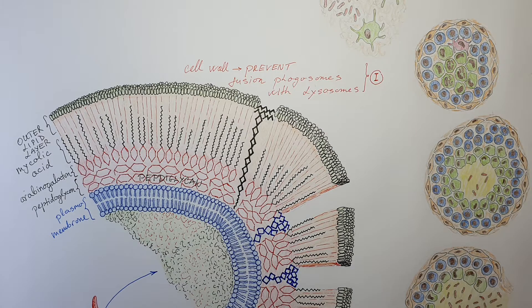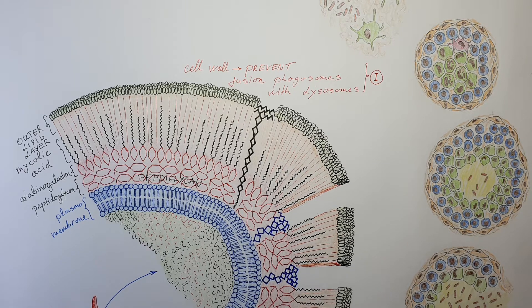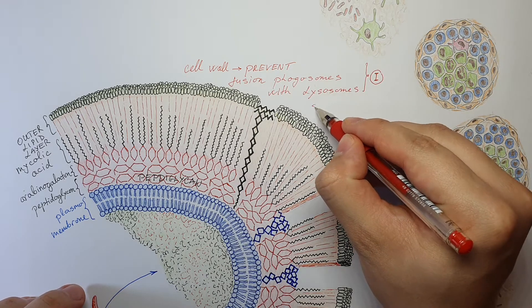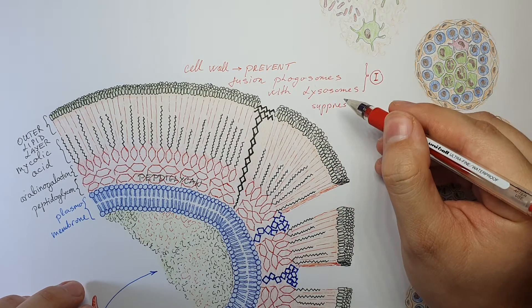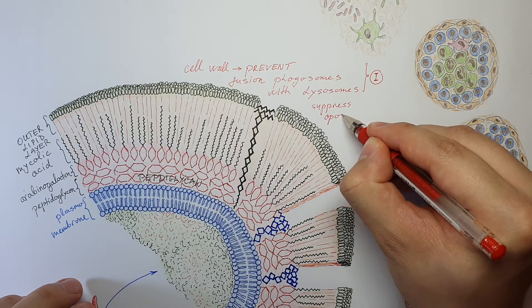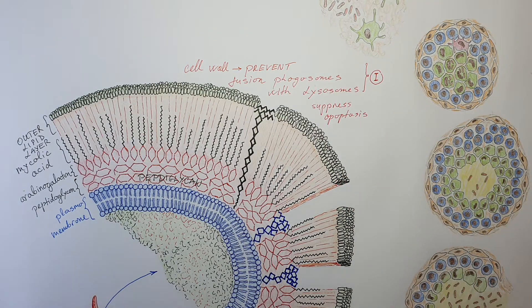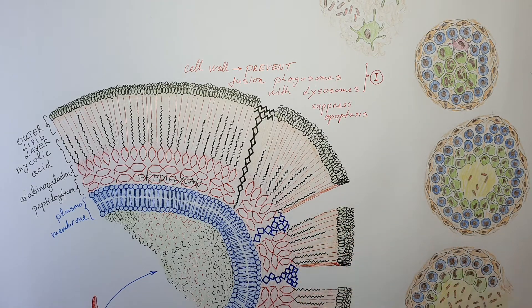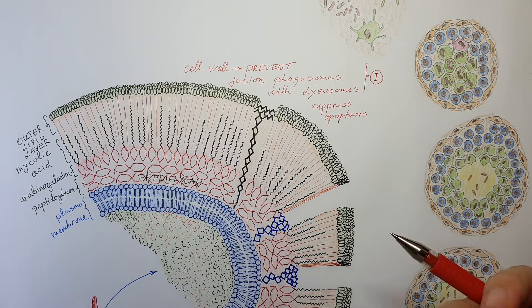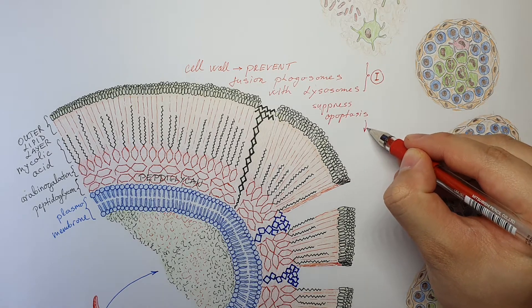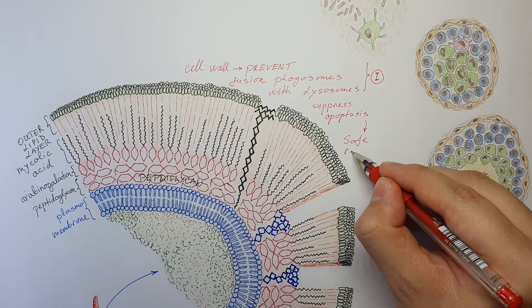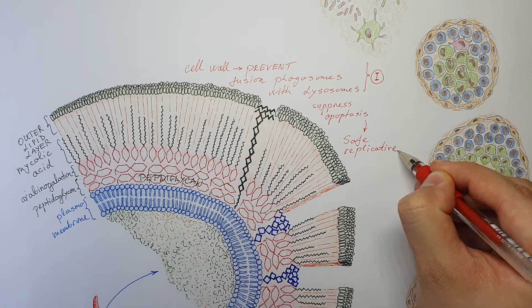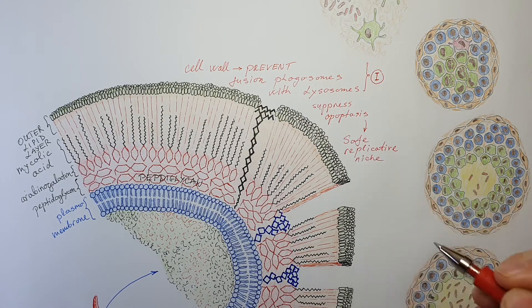But of course, tuberculosis has also other possibilities to replicate in our cells as an intracellular pathogen. It can, for example, suppress apoptosis. So if it suppresses apoptosis, infected alveolar macrophages will not die. And they will basically just be a protective shell, another protective shell for tuberculosis to develop in them. So basically with this, tuberculosis develops a safe replicative niche or environment where it can replicate.